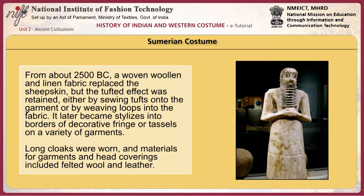From about 2500 BC, a woven woolen and linen fabric replaced the sheepskin, but the tufted effect was retained, either by sewing tufts onto the garment or by weaving loops into the fabric. It later became stylized into borders of decorative fringe or tassels on a variety of garments. Long cloaks were worn, and materials for garments and head coverings included felted wool and leather.